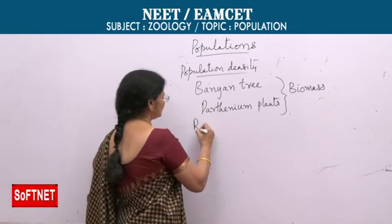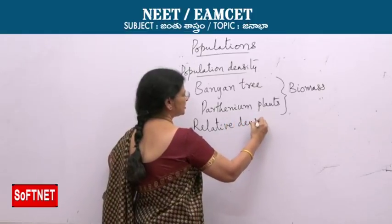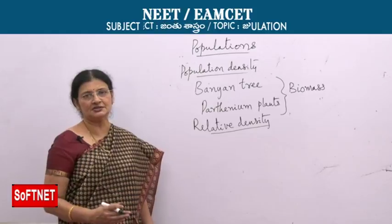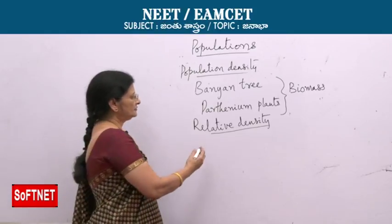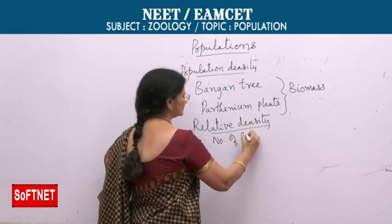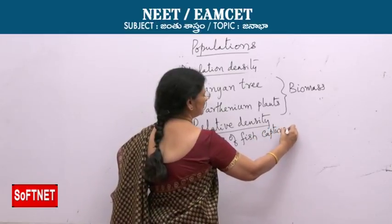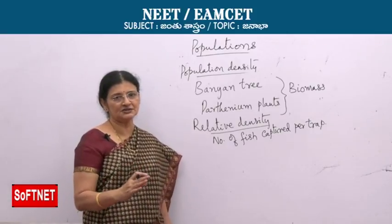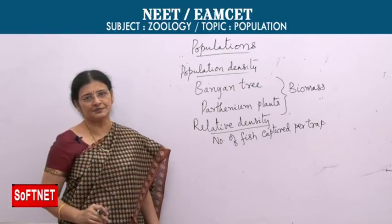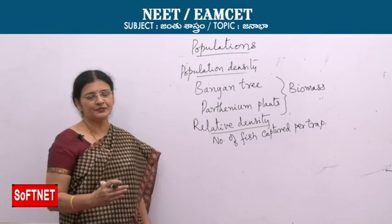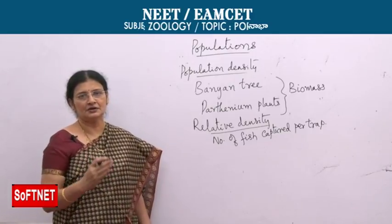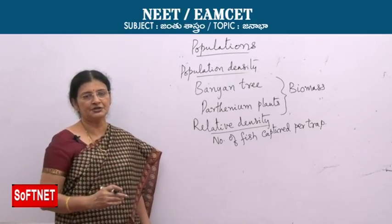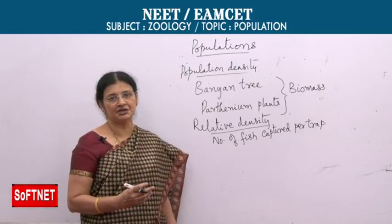Sometimes you have to take relative density into consideration. For example, when talking about the density of fish in a particular season at a particular place, we take the number of fish captured per trap into consideration. Relatively, in one season a certain number of catfish are captured, and the next season the density of catfish is compared. Like that, they do surveys to determine which seasons fish density is more or less, and reach a conclusion using relative density.